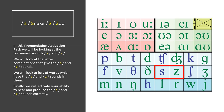In this Pronunciation Activation Pack we will be looking at the consonant sounds S and Z. We will look at the letter combinations that give the S and Z sounds. We will look at lots of words which have the S and Z sounds in them. Finally, we will activate your ability to hear and produce the S and Z sounds correctly.